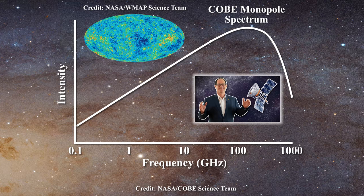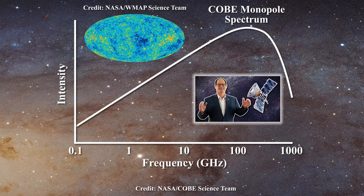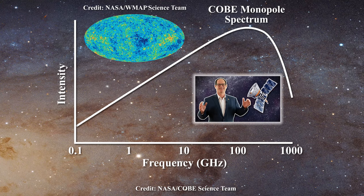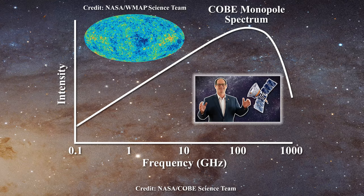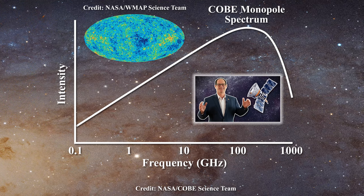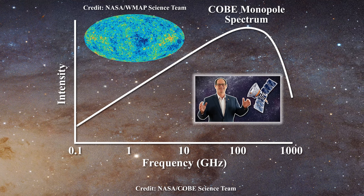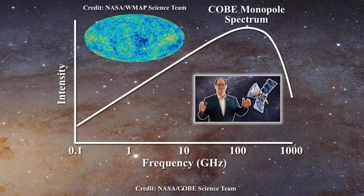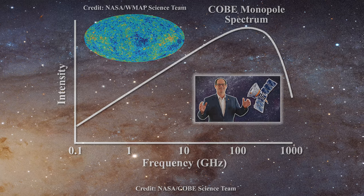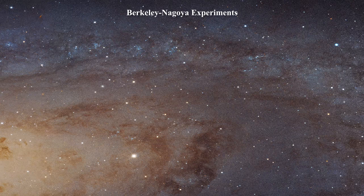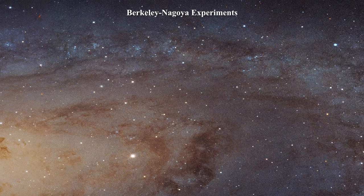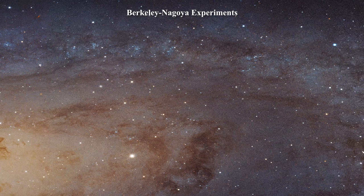The same monopole spectrum must be collected at L2 as was obtained by COBE, or at least several points on the curve must be obtained, but this has never happened. Now relative to measuring the monopole near the Earth, it is important to discuss a result from a rocket which took place just before the launch of COBE — the famous Berkeley-Nagoya experiments. These results are important enough that Mather's description will now be presented in full.